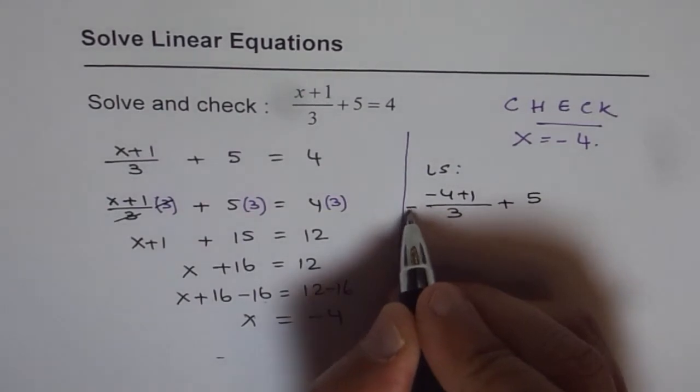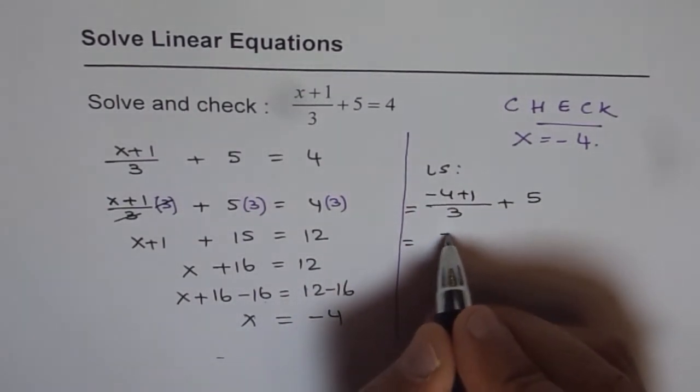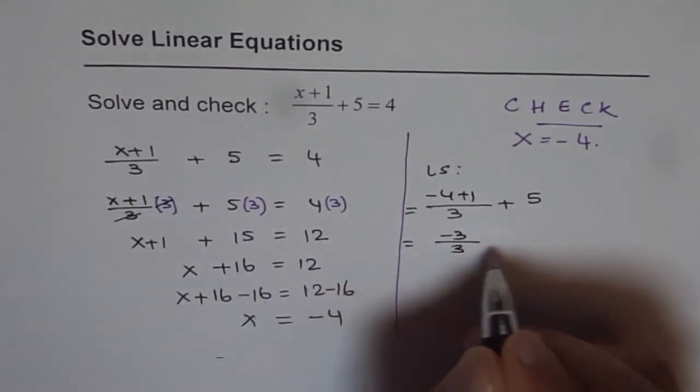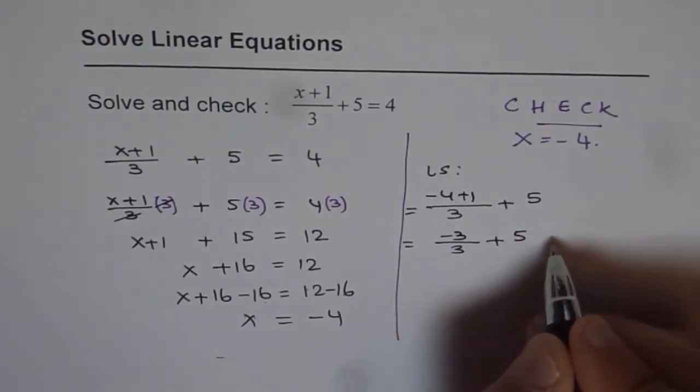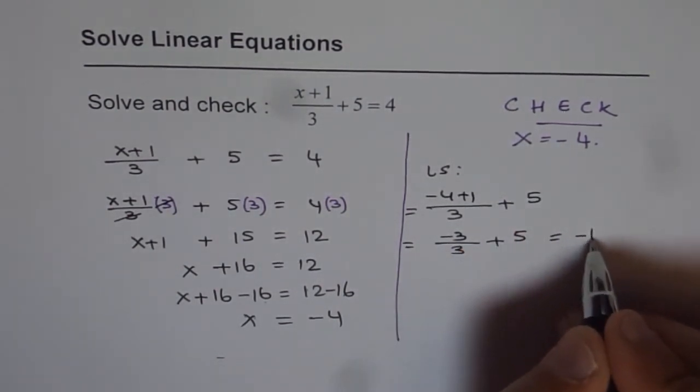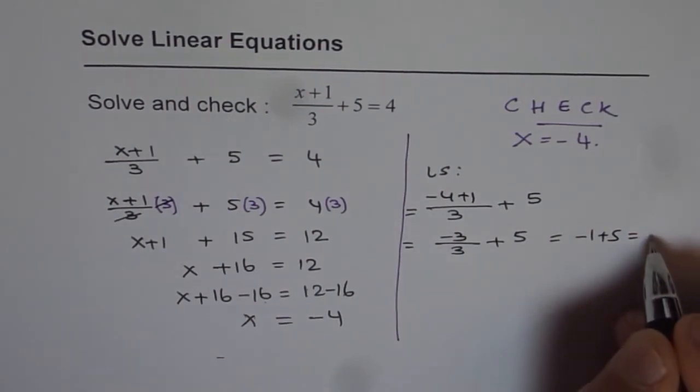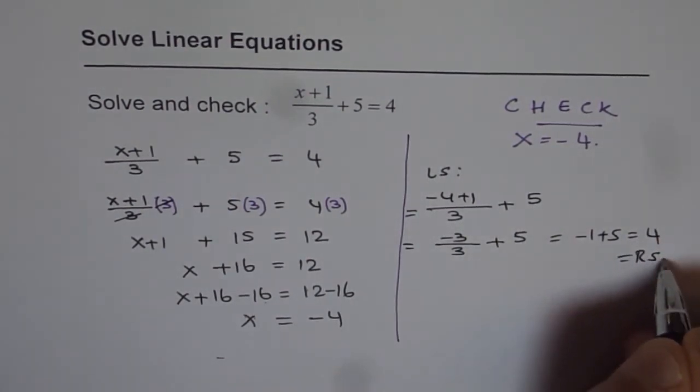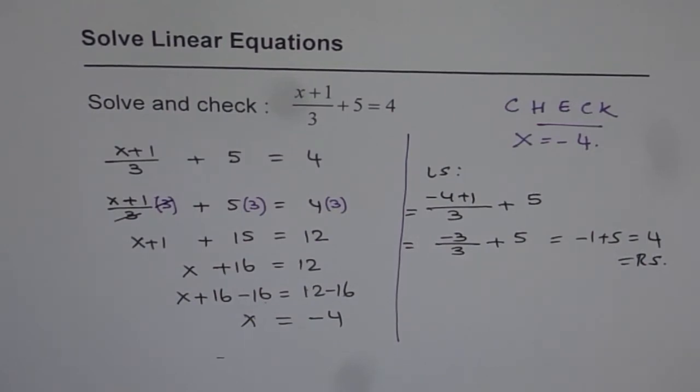Minus 4 plus 1 is minus 3. Minus 3 divided by 3 gives minus 1. Minus 1 plus 5 equals 4, which is the right side. So our solution is correct.